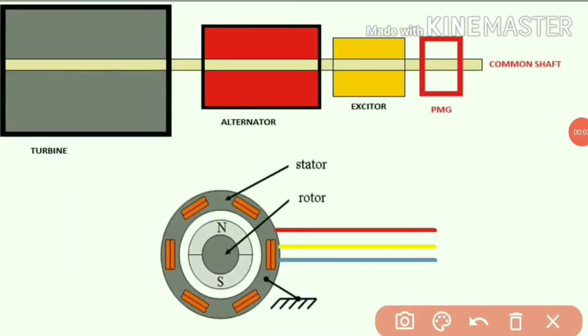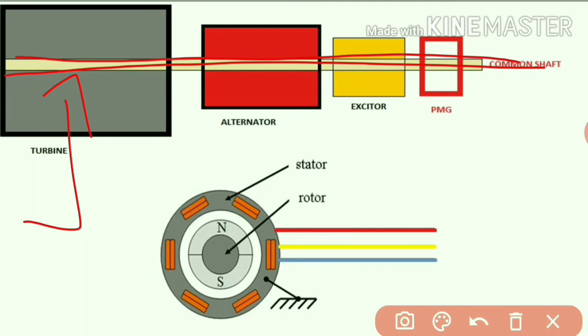So friends, when the steam comes through the turbine blade, the turbine rotor starts to rotate in one particular direction. So due to that, this combined or common shaft is going to rotate.